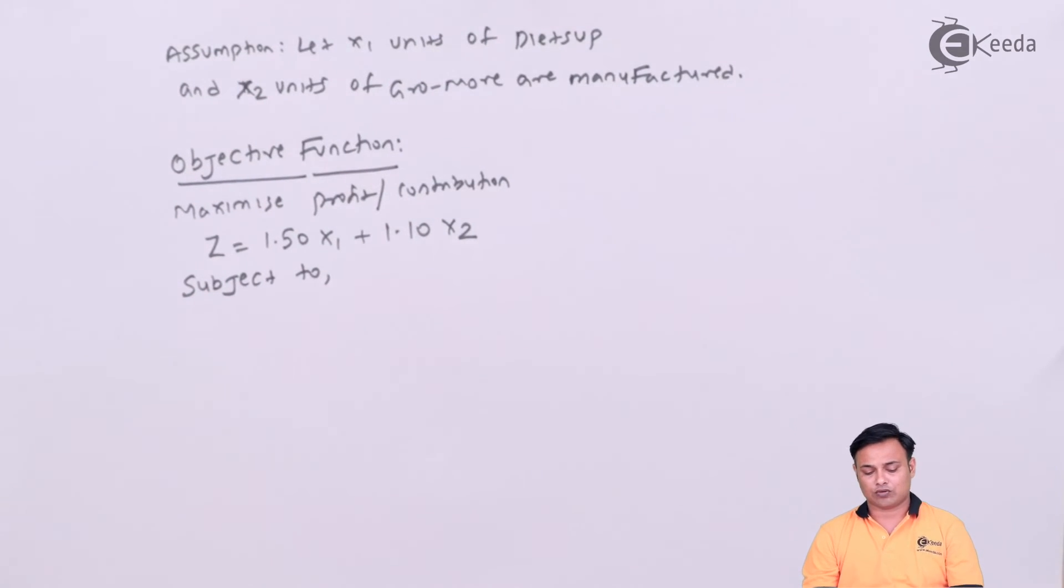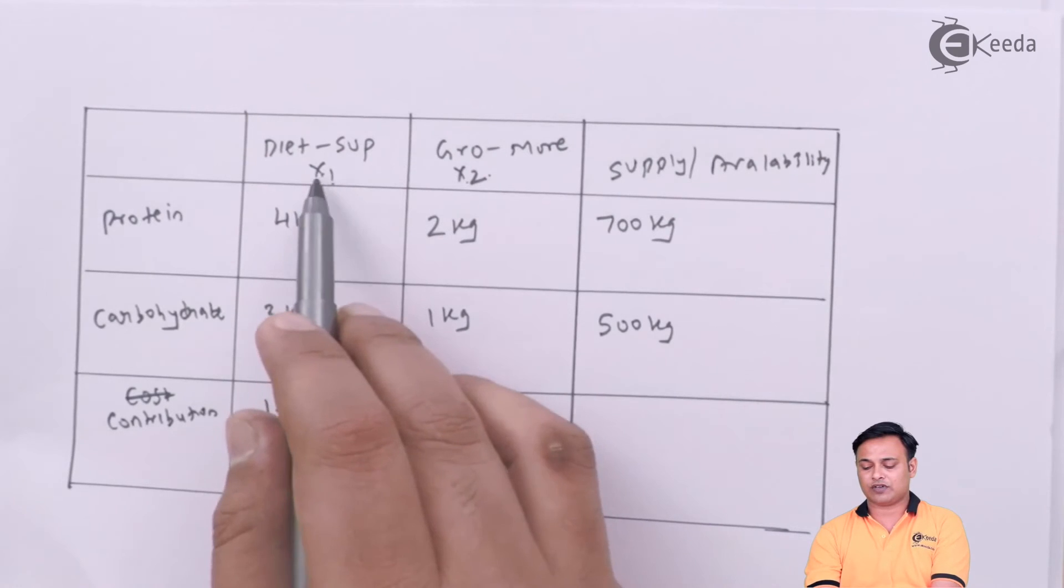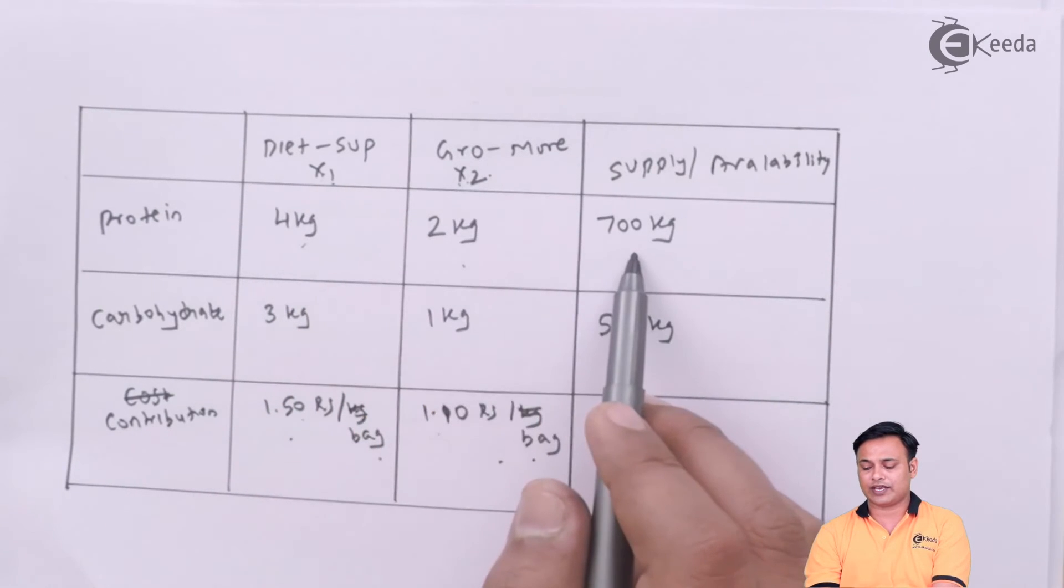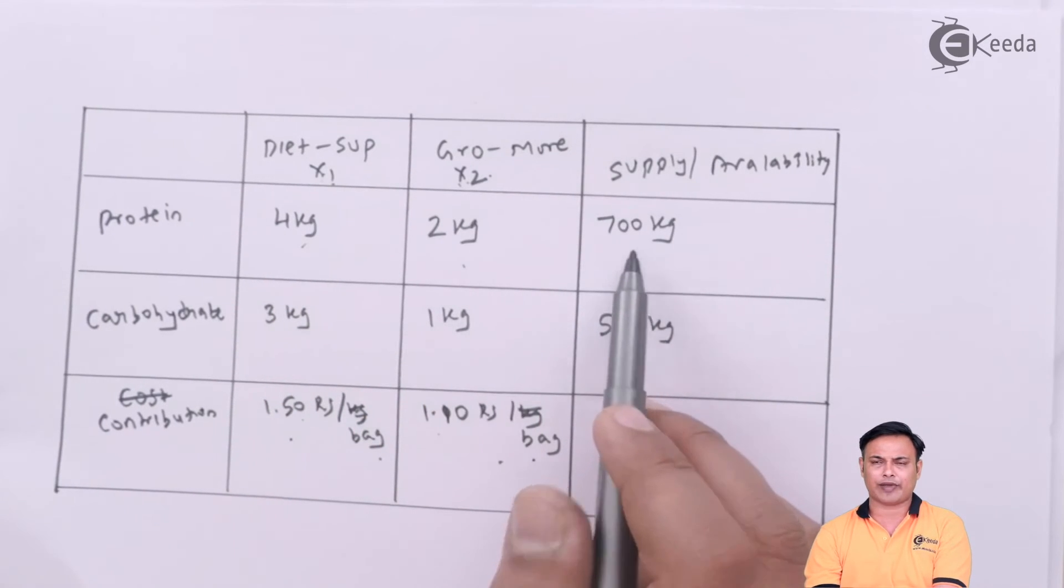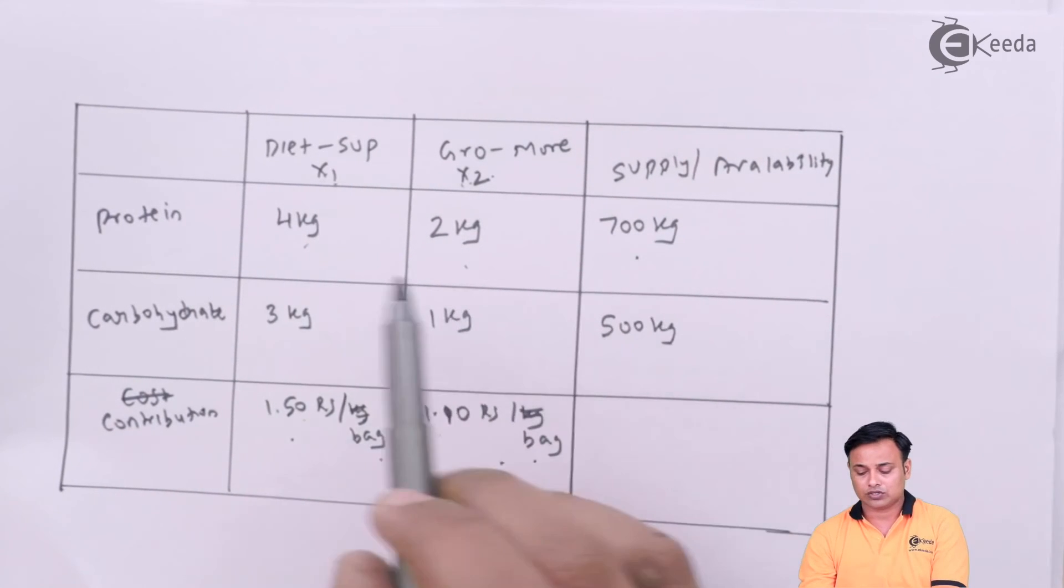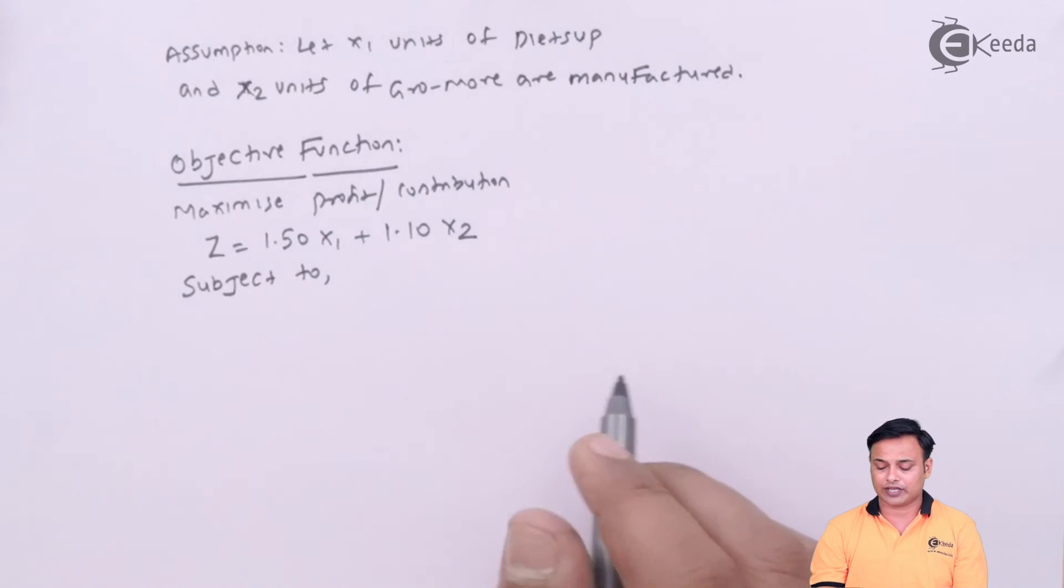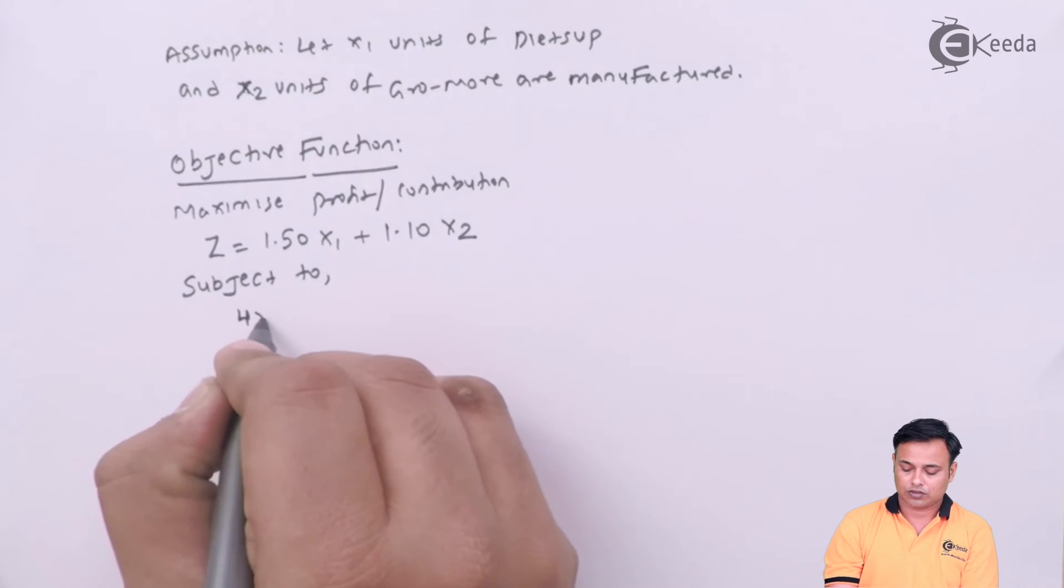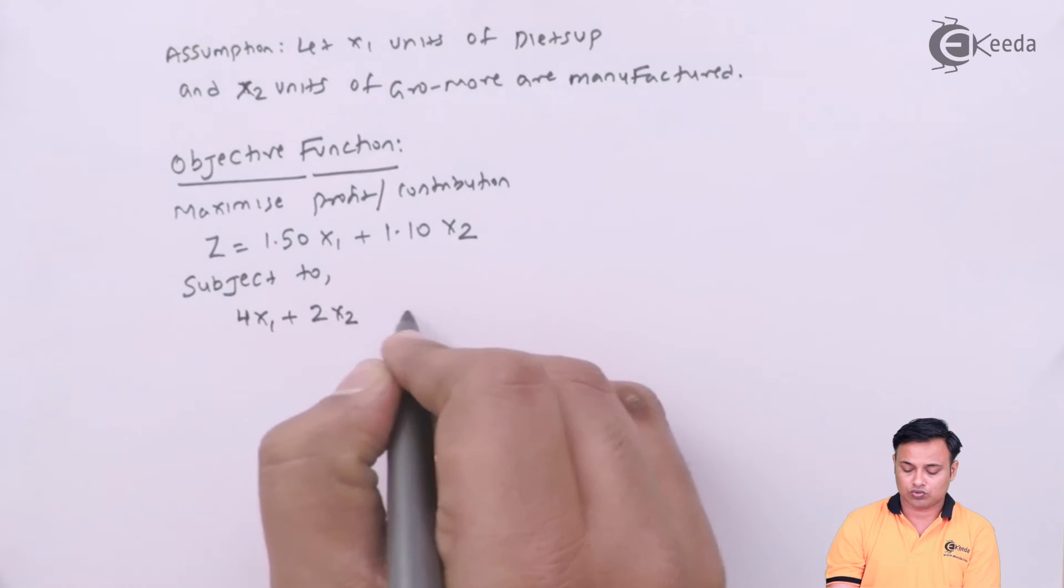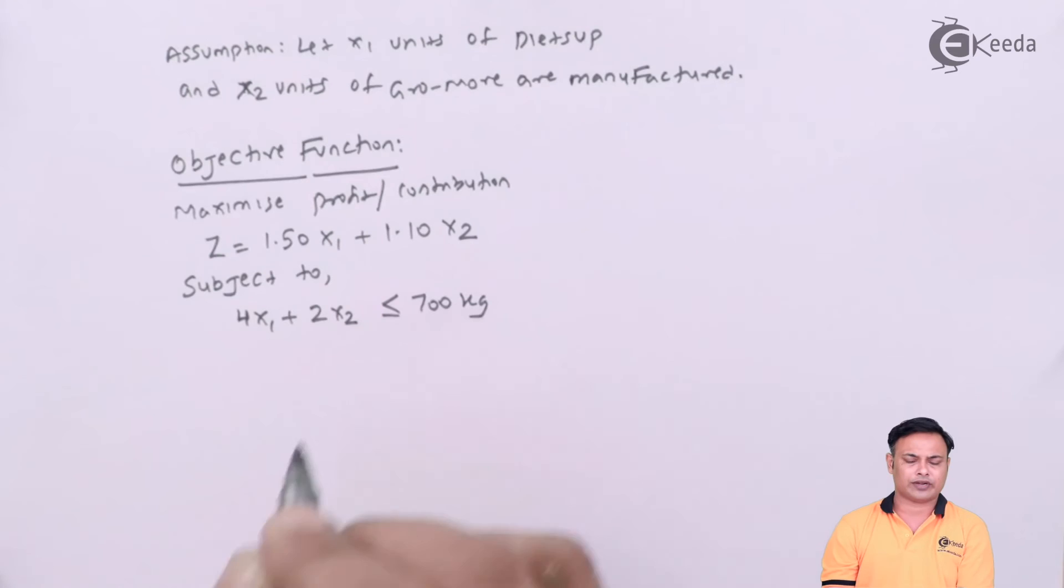Subject to, what are my constraints? Now my first constraint will be protein supply. 4x1 plus 2x2 less than or equal to 700 kg.